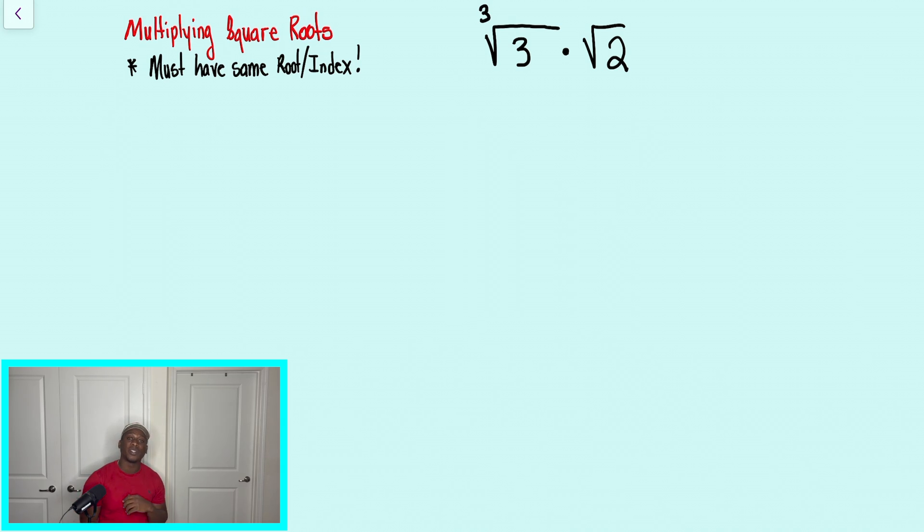What's good, everybody? I'm Mr. Peters. In today's video, I'm going to be talking about how to multiply square roots. And the first very important tip I'm going to tell you is that for us to multiply square roots, they have to have the same index slash root.